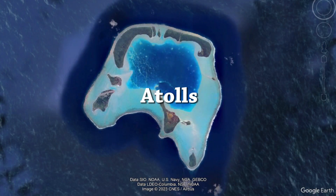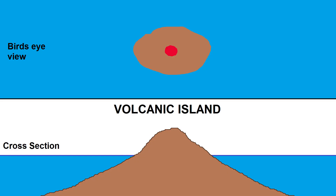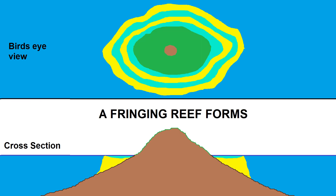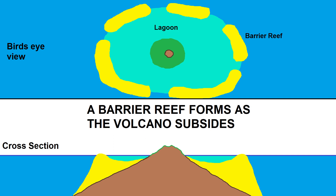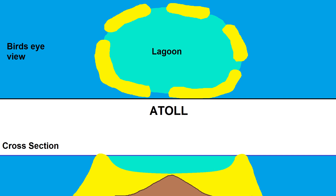Atolls are reefs with a circular shape that have an open lagoon in the center. They begin as fringing reefs that form in the shallow waters around volcanic islands. Over time the reef continues to expand, while erosion processes over long periods can cause the volcanic island in the interior to sink below sea level, eventually leaving a ring of coral with a lagoon in its center.